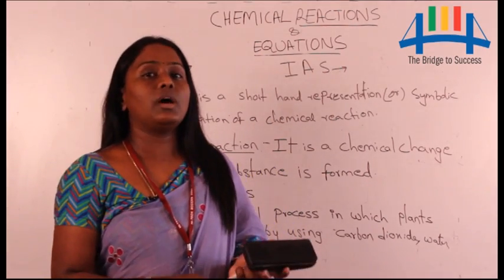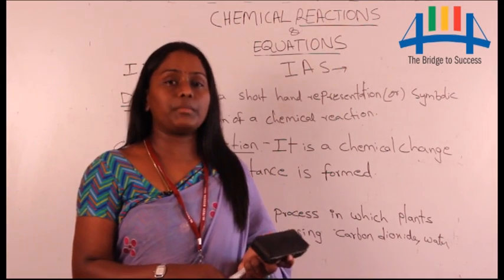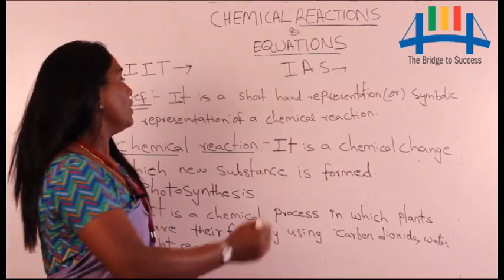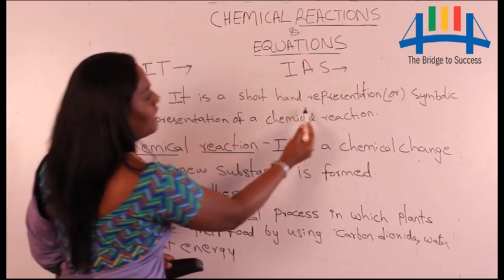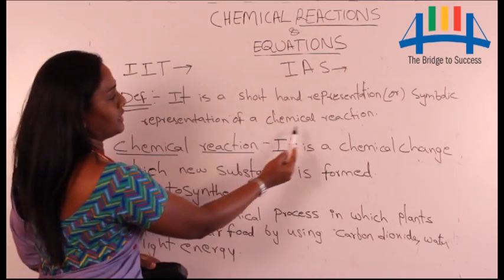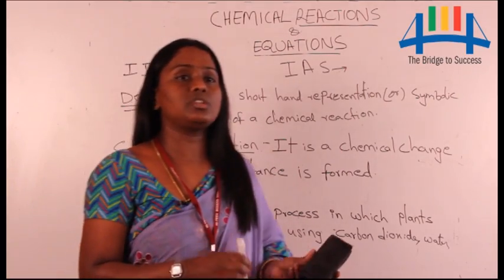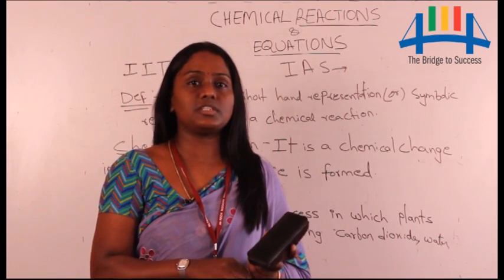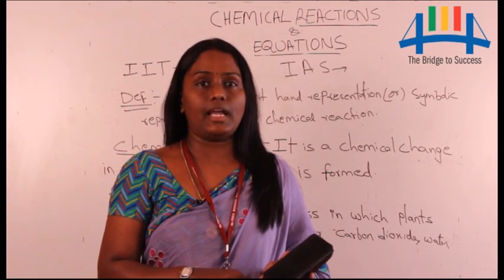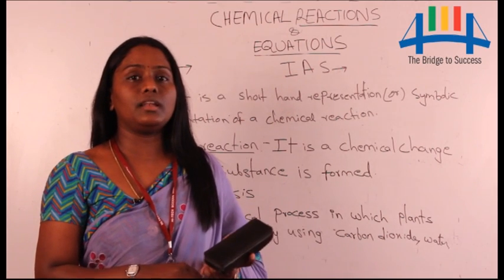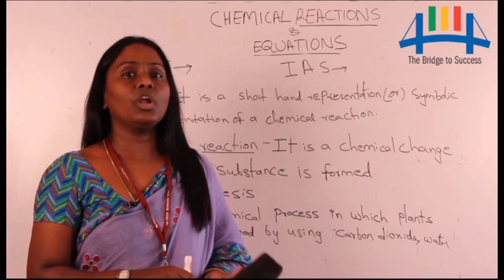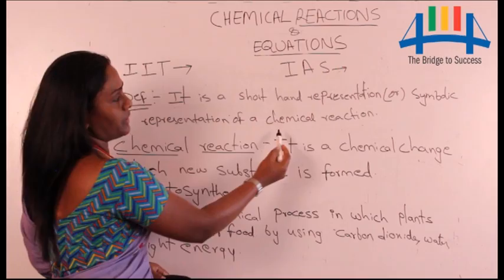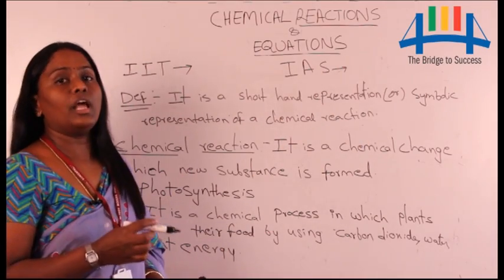We represent a chemical reaction in the form of short by using a chemical equation. So coming to the definition: a chemical equation is a shorthand representation or symbolic representation of a chemical reaction. In this, we use the symbols of the substances which are participating in a chemical reaction.